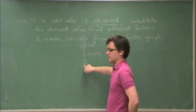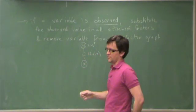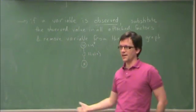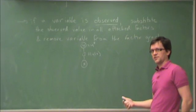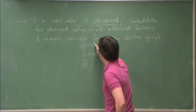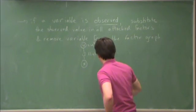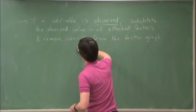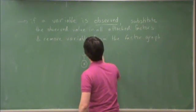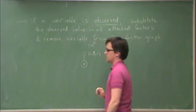Which could either be x or the flip of x. So if we see y, what we do is we get rid of y, this comes out of the factor graph, and then we just substitute y star.